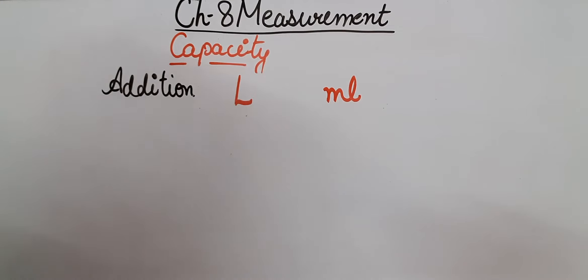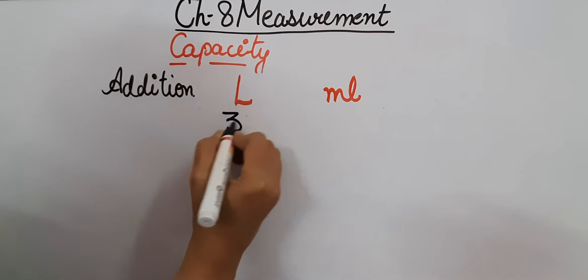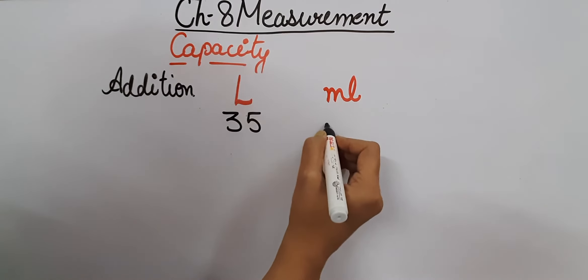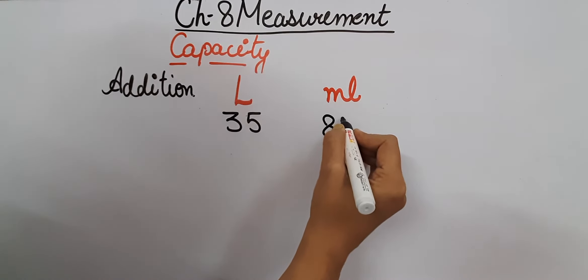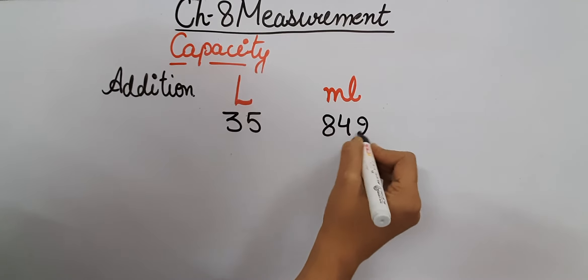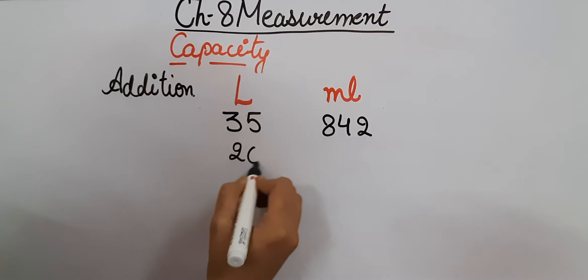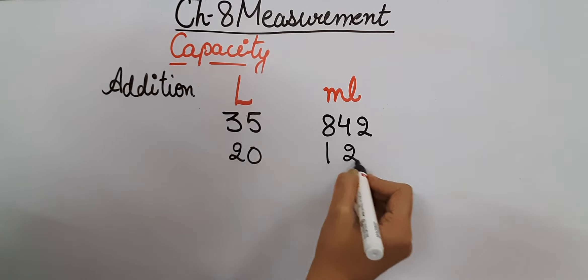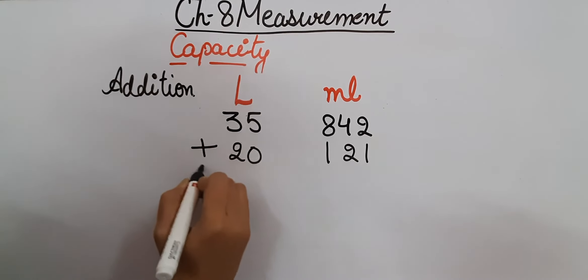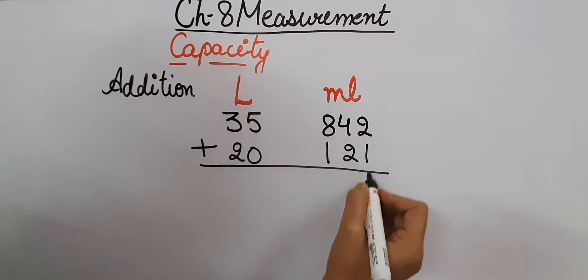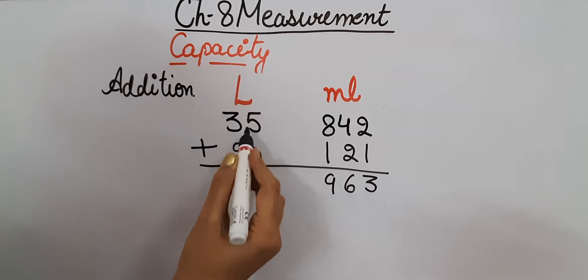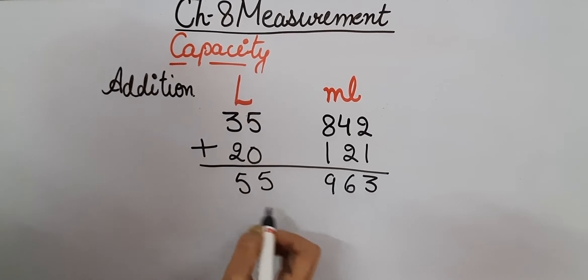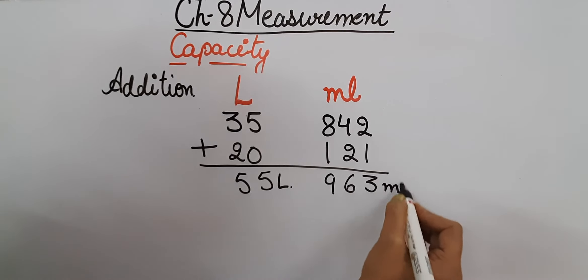Let's write one question here: 35 liters 842 milliliters, and 20 liters 121 milliliters. Let's add these. 2 plus 1 is 3, 4 plus 2 is 6, 8 plus 1 is 9, 5 plus 0 is 5, 3 plus 2 is 5. So our answer is 55 liters and 963 milliliters.